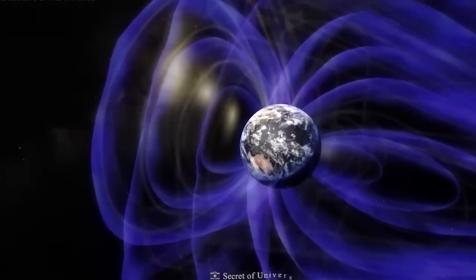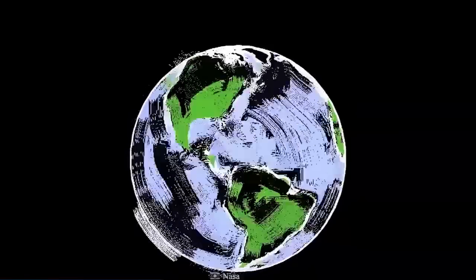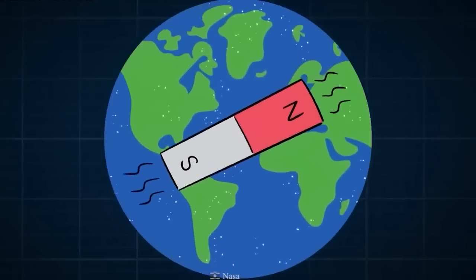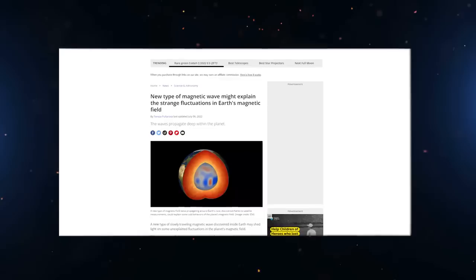But reversals are neither regular nor easy to plan for. In fact, the Earth's magnetic field is a tangled mess of loops of magnetic energy that twist and turn around each other. It doesn't stand still for long.